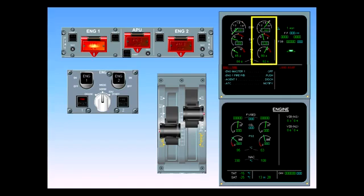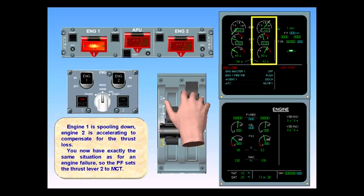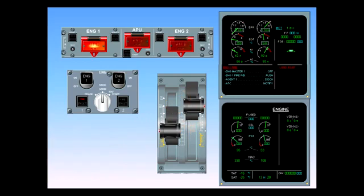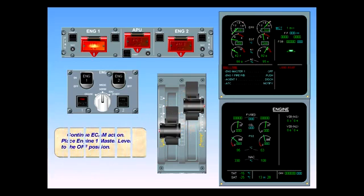You now have exactly the same situation as for an engine failure. So the pilot flying sets thrust lever two to MCT. Continue ECAM action. Place engine one master lever to the off position.